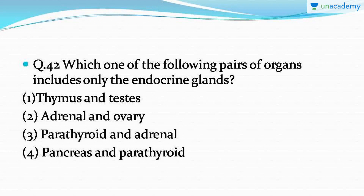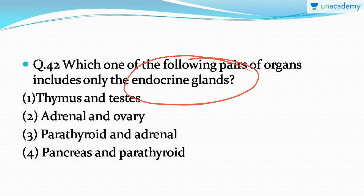Question number 42: which one of the following pairs of organs includes only endocrine glands? To answer this, you must know the difference between endocrine and exocrine glands. Exocrine glands secrete their hormones through a duct, whereas endocrine glands secrete their hormones directly into the blood without any duct. The correct answer is option number three: parathyroid and adrenal gland, both of which are endocrine glands that secrete hormones directly into the blood.